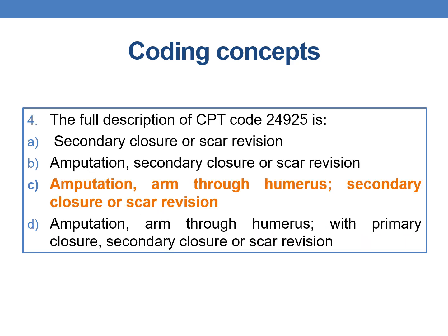Next question: what is the full description of CPT code 24925? The answer is amputation, arm through humerus, secondary closure or scar revision. Option C is the complete description of 24925 — amputation, arm through humerus, secondary closure or scar revision.